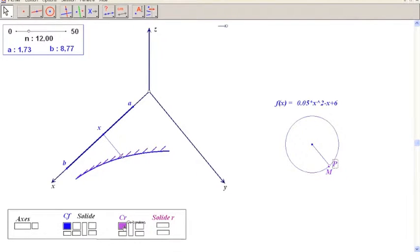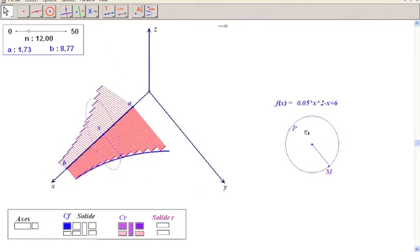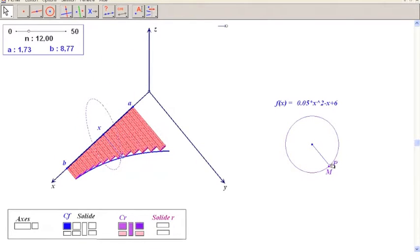the piecewise function associated to this function and to this subdivision, these 12 intervals, and we rotate around the circles. If we rotate like this to generate another solid,